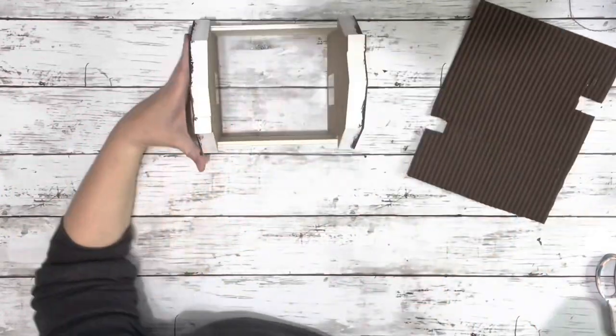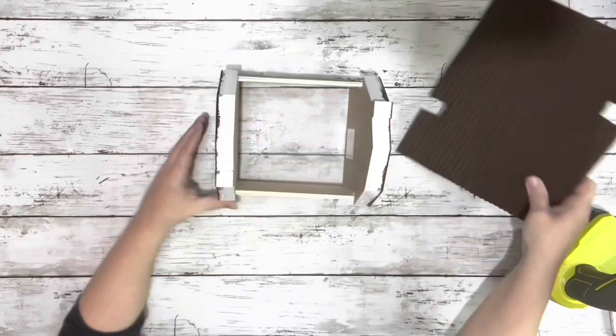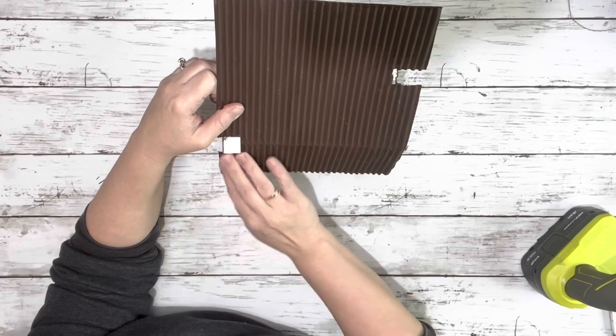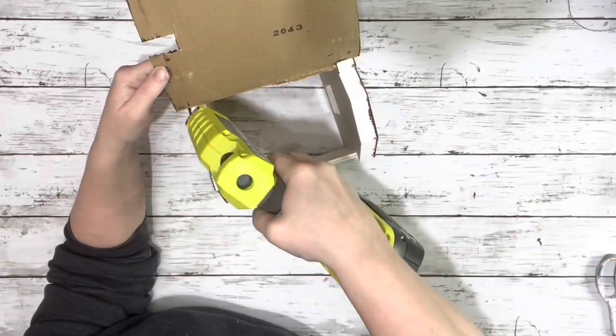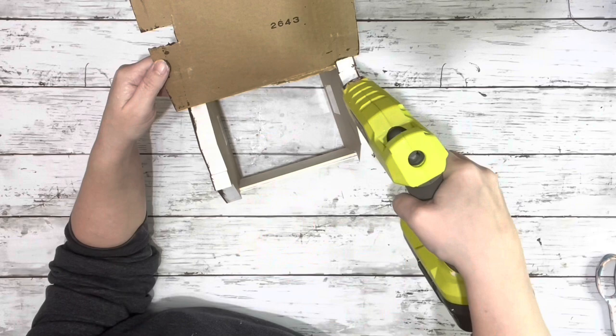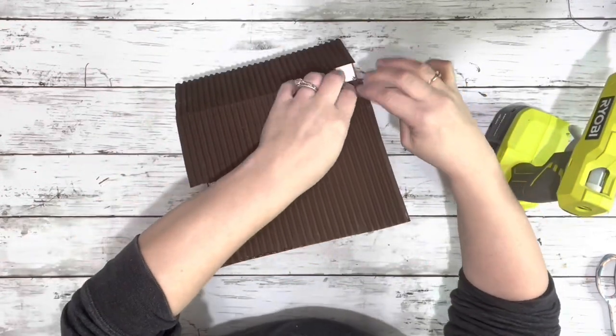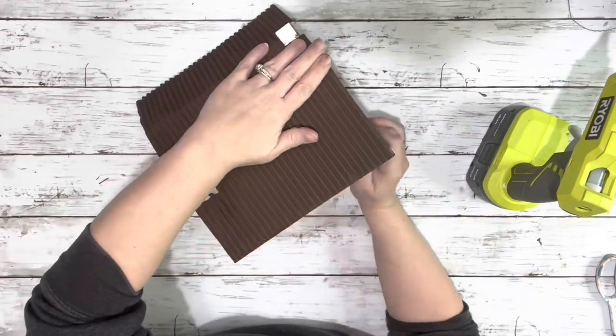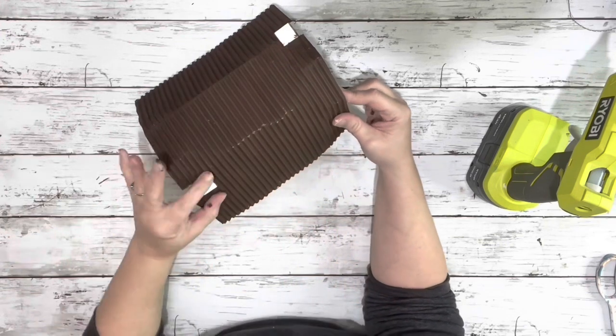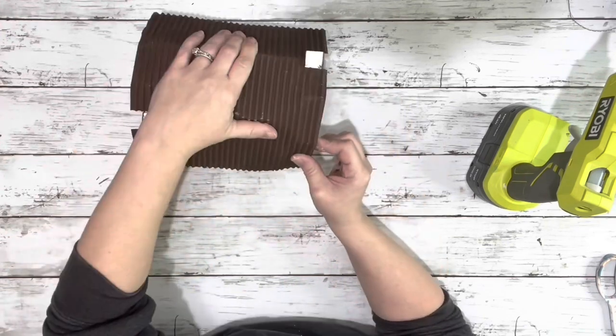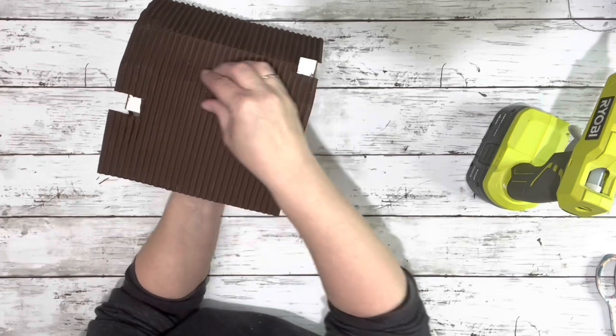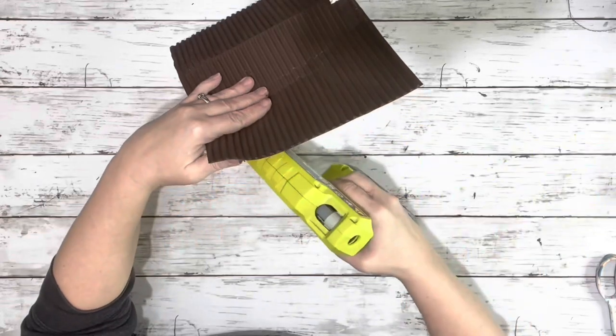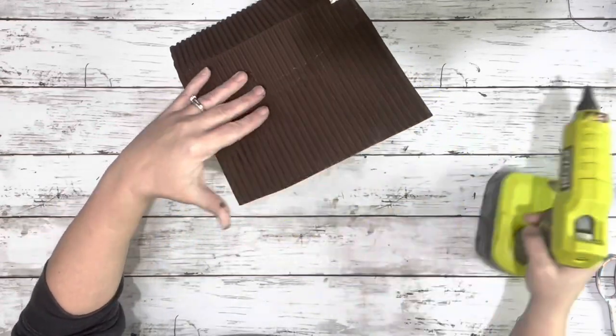Once it was dry, I started by hot gluing a section at a time, placing that down and putting it over the chimney. I just kept going in sections, doing the hot glue. When I folded it, it creased a little bit, so I'll go back in and touch that up with some of the paint. Just making sure that it fits all nicely and hot gluing it around the other chimney and down the sides.